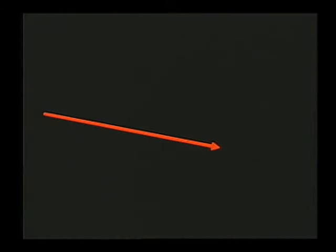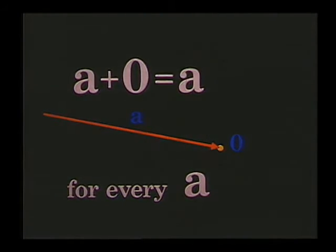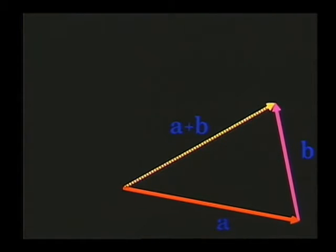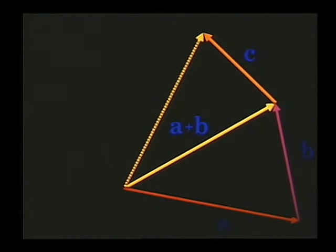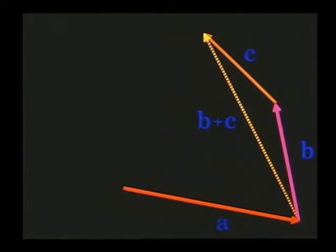The sum A plus B equals the sum B plus A for all vectors A and B. The procedure for addition applies even if one or both of the vectors is the zero vector. It follows that A plus the zero vector equals A for any vector A. The definition of addition tells us how to add two vectors. If three vectors are given, we may first find A plus B and then add C.